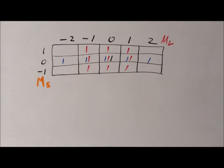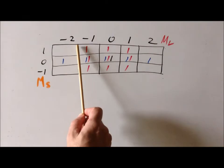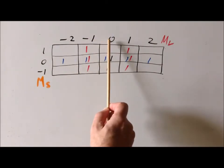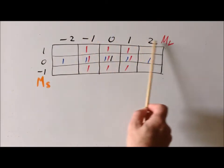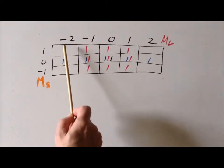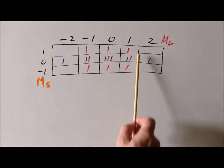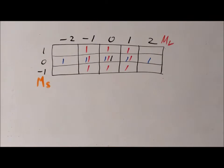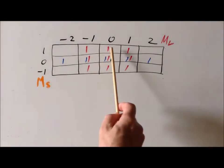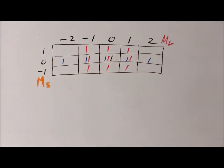We are now ready to derive our first symbol. What we want to look for is a rectangular region in the table that has at least one tick mark in each and every box. We notice an imaginary rectangle going from minus one through zero to plus one along the M sub L axis and bounded from one to zero to minus one on the M sub S axis. Within this rectangular region, each of the boxes has at least one pink tick mark.